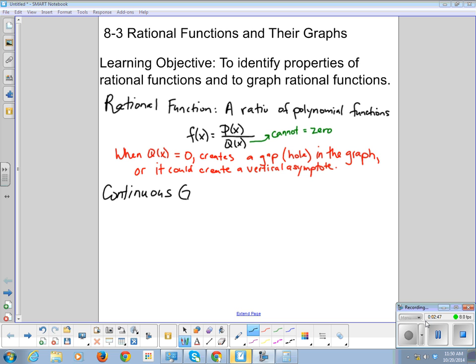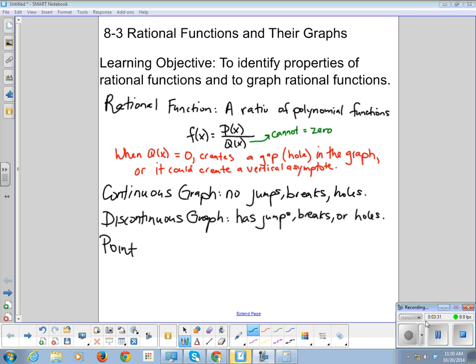So we've got the continuous graph, and he's got no jumps, breaks, or holes. We've got the discontinuous graph, and he has jumps, breaks, or holes. Then we have the point of discontinuity, and that's where your denominator equals zero.